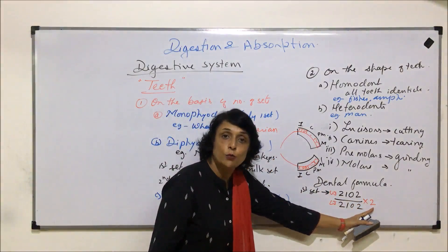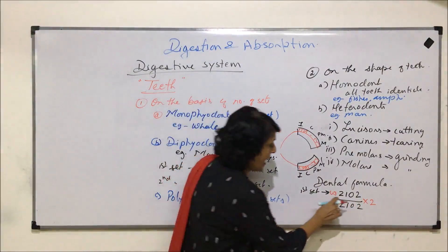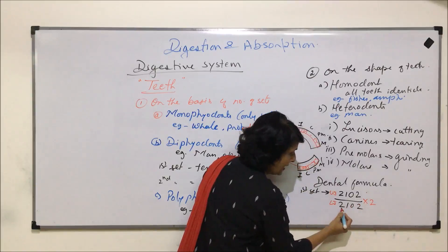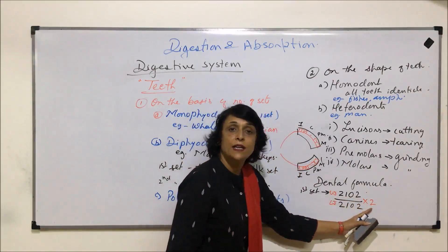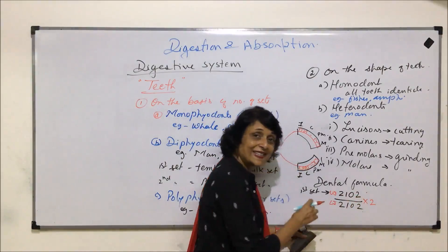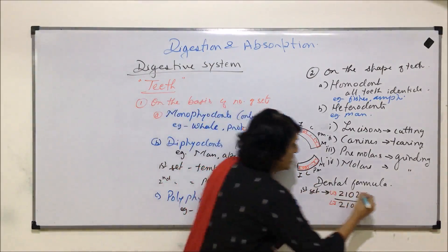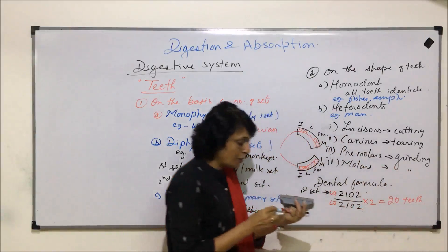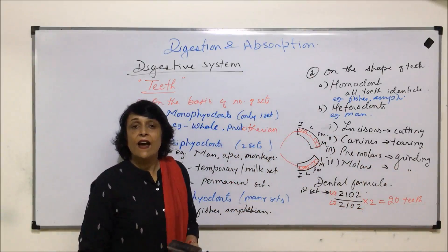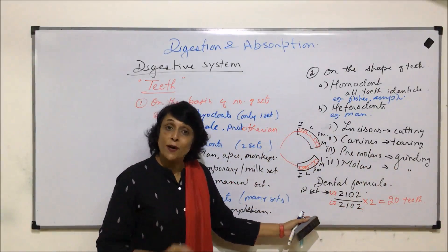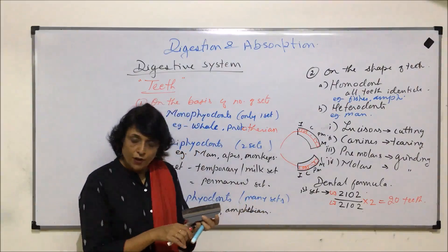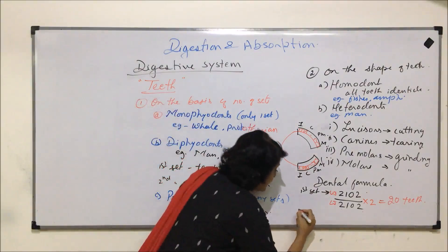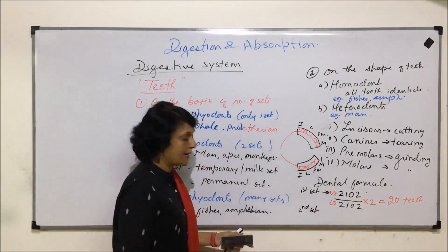Counting for one half: 2 + 1 + 0 + 2 = 5 teeth. The same five are on the other side, giving 10 in the upper jaw and 10 in the lower jaw, for a total of 20 teeth in the milk set. Now let us write down the permanent set to compare. The formula for the second set, that is the permanent set, is 2 1 2 3 over 2 1 2 3.